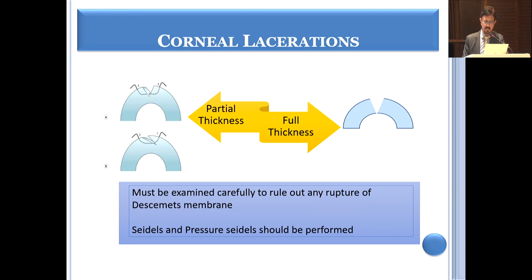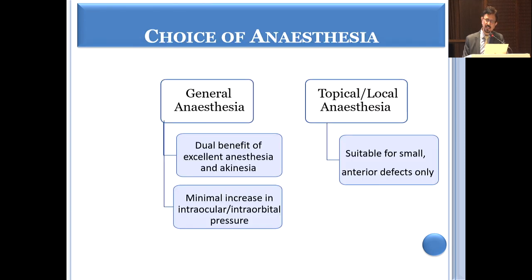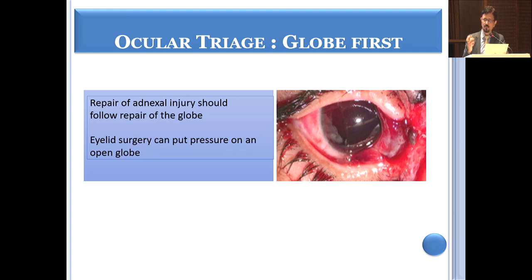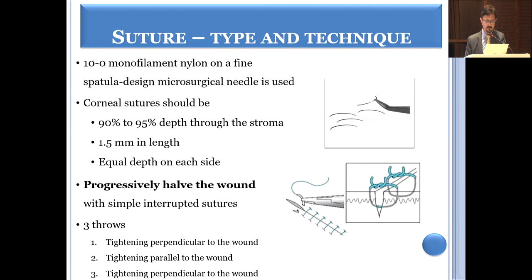The goal of management is a proper watertight globe with maintained integrity. Partial-thickness lacerations that are well-apposed may be observed in adults but in children it is better to suture. Surgery is performed under general anesthesia in the vast majority. For adnexal injuries combined with corneal injury, the corneal injury must be repaired first. Corneal repair uses 10-0 nylon monofilament sutures placed at close to 90% depth.